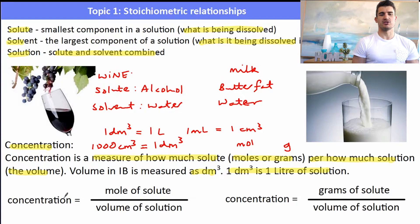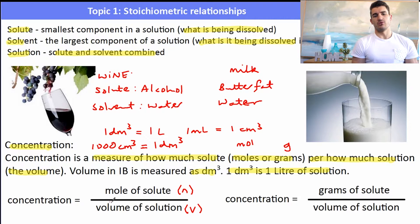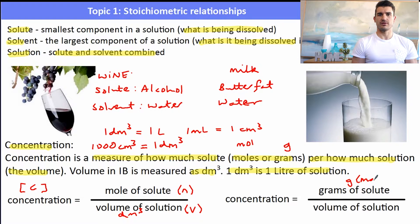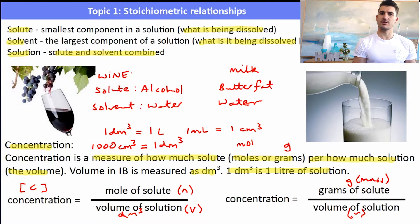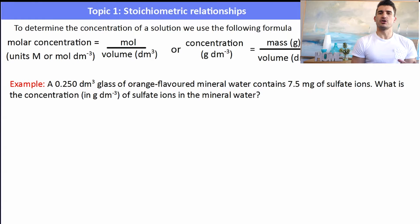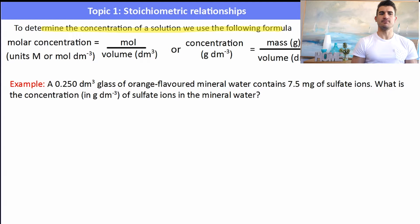There are two ways to determine concentration. The first is molar concentration: C = n/V, where n is moles and V is volume in dm³, with units of mol/dm³ or molarity (M). The second is mass concentration: C = mass in grams divided by volume in dm³, giving units of g/dm³. Make sure to read the question carefully to know which to use.